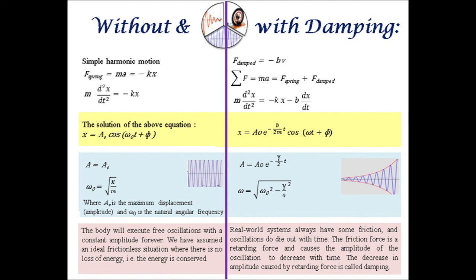The equation of motion of the body becomes: ΣF equals F_spring plus F_damped. The solution to the differential equation will be x equals A₀ e^(−bt/2m) times cosine(ωt + φ).